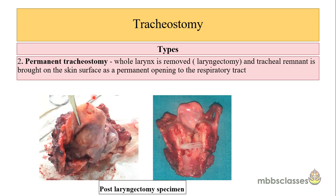This is a specimen of total laryngectomy. Here you can see the epiglottis, the thyroid cartilage framework, the cricoid cartilage, and a growth. Whenever total laryngectomy is done, the tracheal remnant is brought to the skin as a permanent opening — this is a case of permanent tracheostomy.